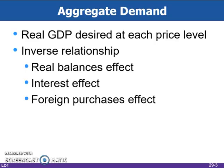Aggregate demand is a schedule or curve that shows the various amounts of real domestic output that domestic and foreign buyers desire to purchase at each possible price level. The aggregate demand curve shows an inverse relationship between price level and real domestic output. Don't confuse the reasons for this inverse relationship with what we learned about demand in Chapter 3. The explanation is not the same as for demand for a single product, which centered on the substitution and income effects.